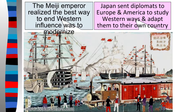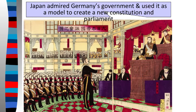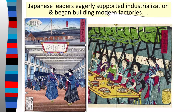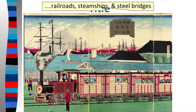During the Meiji Restoration, Japan sent different diplomats all across Europe and America to study and practice Western ways, then adapt them back home. When they visited Germany, they really liked Germany's government and used it as a model to create a new constitution and parliament. Japanese leaders also eagerly supported industrialization — all the stuff from the Industrial Revolution — and started building modern factories, railroads, steamships, and bridges, the same things that appeared in Western Europe.